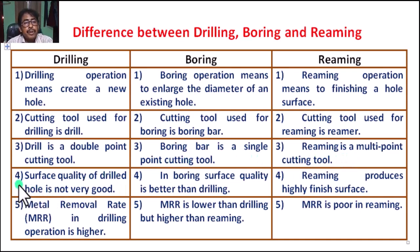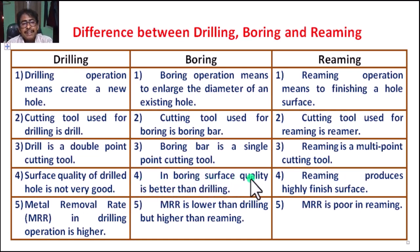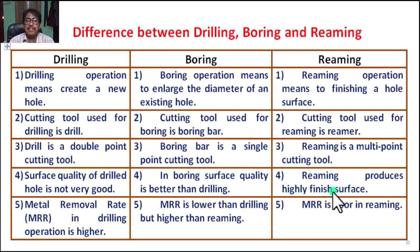Number four, for drilling: the surface quality of a drilled hole is not very good. Number four, for boring: surface quality is better than drilling. Number four, for reaming: reaming produces a highly finished surface to the exact size.